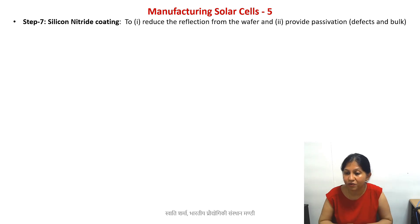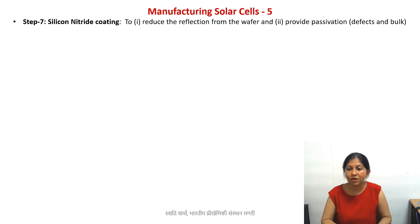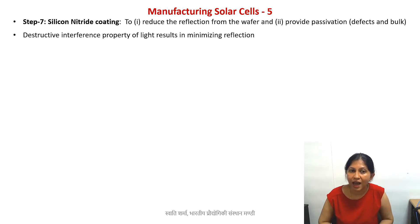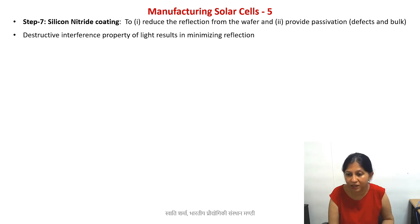An additional advantage of the nitride layer is that it reduces reflection from the wafer. We want to minimize reflection because we want to capture as much sunlight — as many photons — as possible. Silicon nitride creates a destructive interference pattern, which results in reduced reflection of light.